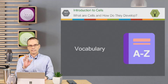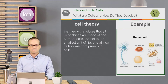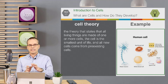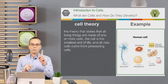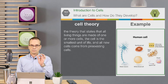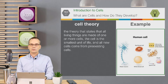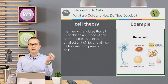As always in any lesson, let's start out with some key vocabulary words. The first one is cell theory. Cell theory is a theory that states that all living things are made up of one or more cells, that cells are the smallest unit of life, and that all new cells come from pre-existing cells — so cells create other cells.